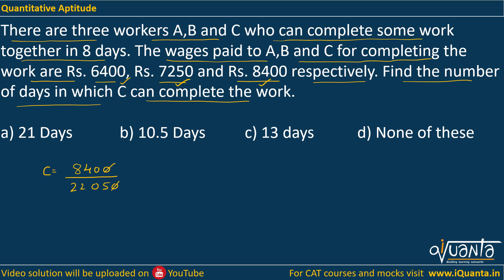We simplify 8400 by 22050: cancelling the zero gives us 840 by 2205, then dividing by 7 gives 120 by 315, and further cancelling by 15 gives us 8 by 21. So C is doing 8/21 of the total work.